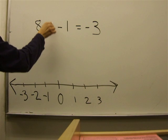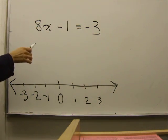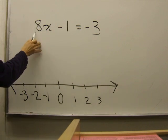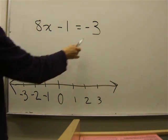We want to isolate this x. We want to separate it from everything so that we can find out what it represents. This really is telling you 8 times a number minus 1 equals negative 3.